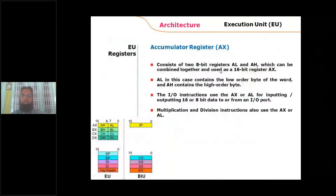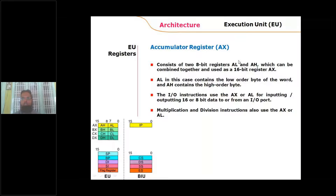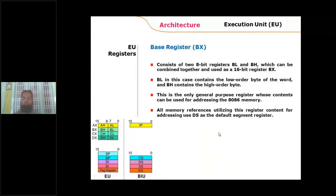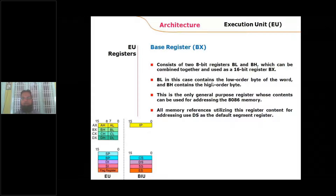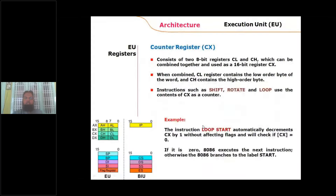The AX register is the accumulator; results of operations like multiplication and division are automatically stored in AX. AL is the 8-bit accumulator. BX is the base register, which can hold data values and also the base address of the data segment. It can hold the offset address of the data segment to access data values.